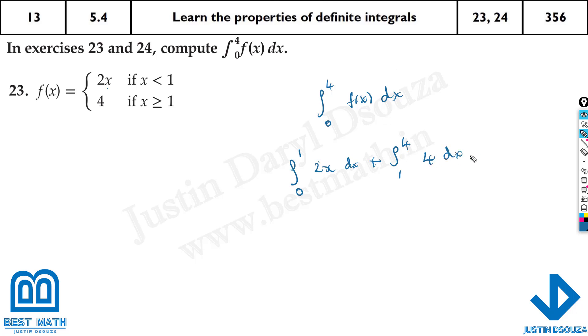This is it. You put this in the calculator and you get the answer. You can directly solve this as well by integrating it. It will be 2x² divided by 2, and the limits are 0 to 1, plus it will be 4x with limits from 1 to 4.